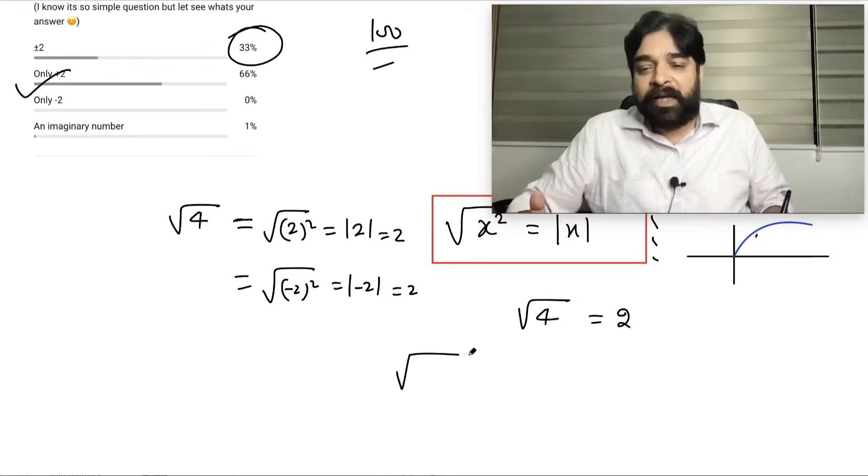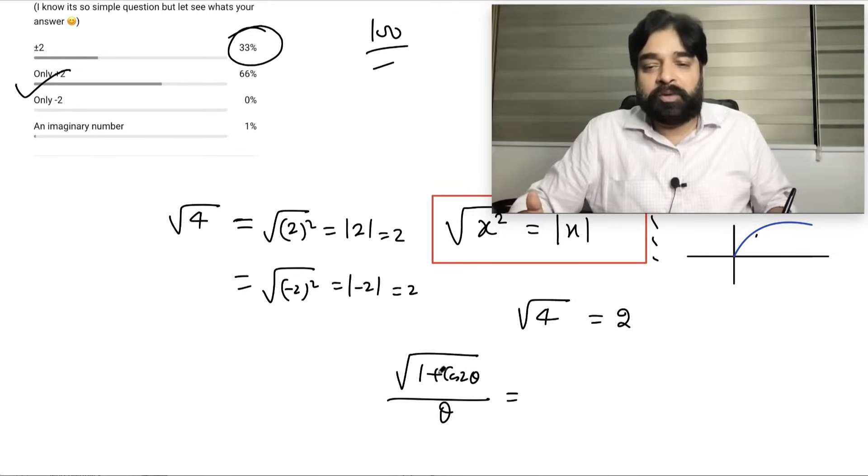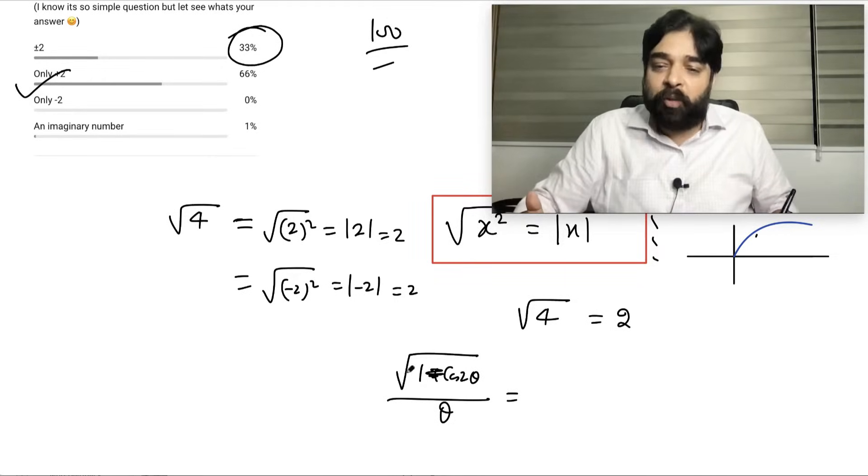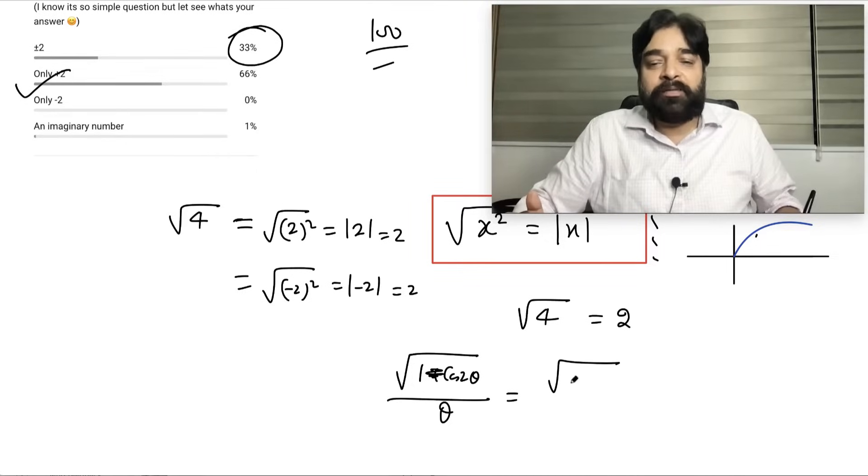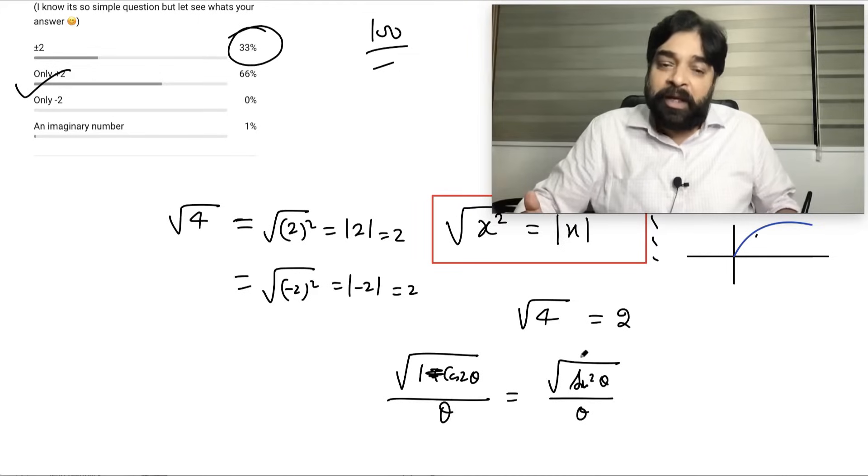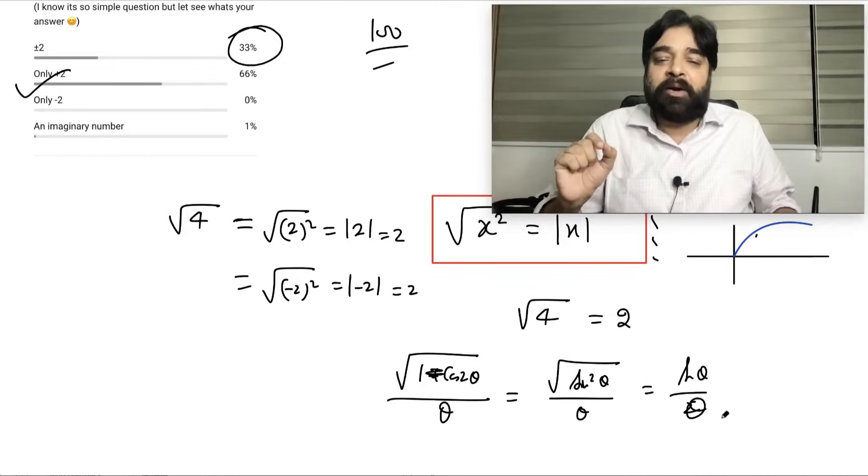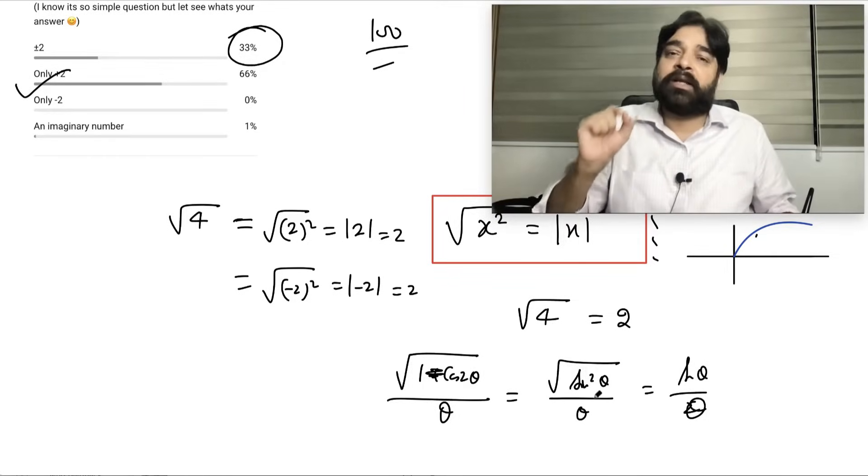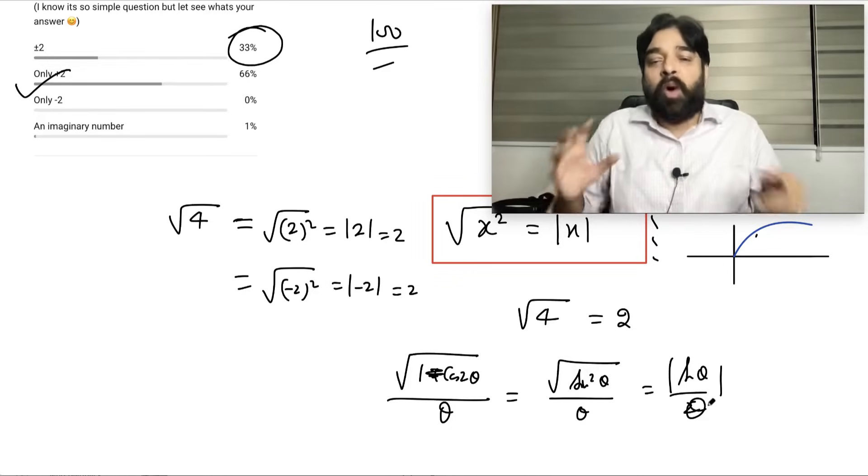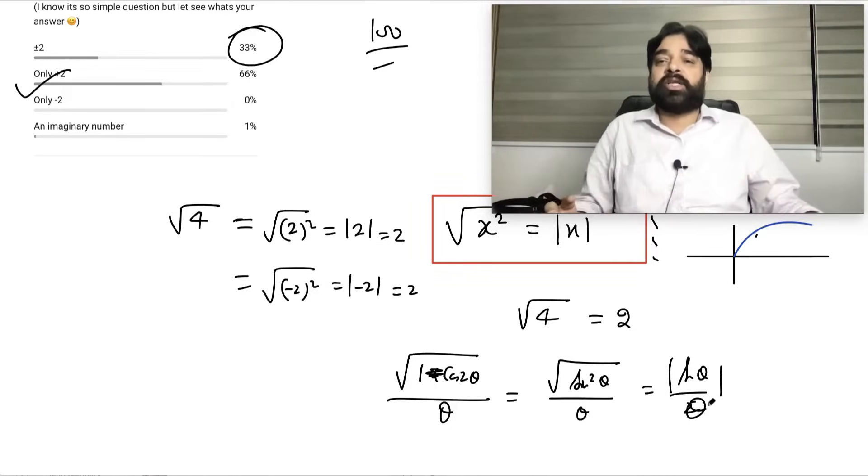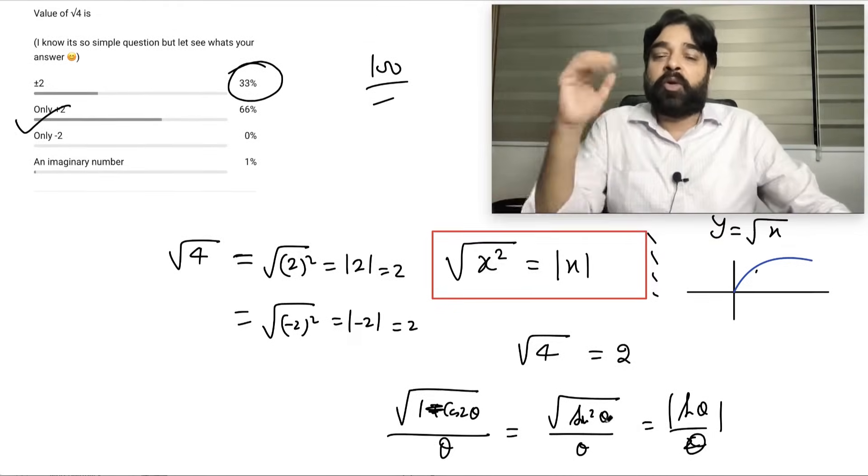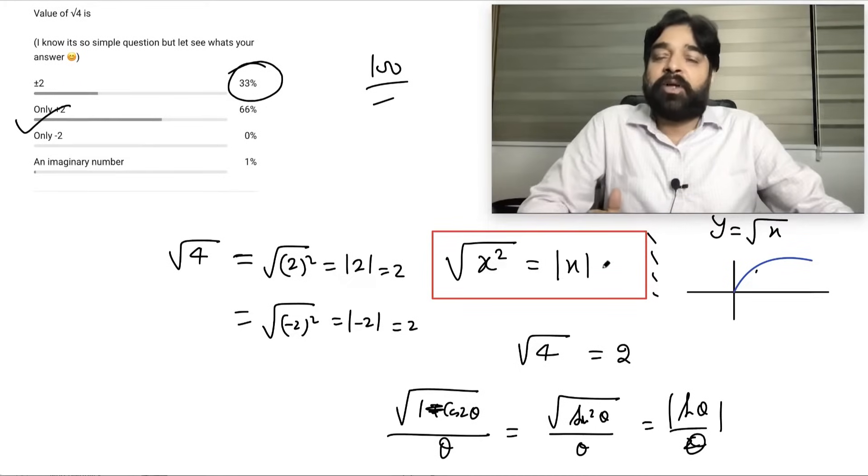Sometime they will say root of 1 minus cos 2 theta divided by... 1 minus cos 2 theta is the root of sin square theta divided by theta. So many times in JEE and all used to come. So here the real game is done. If you write sin theta by theta then answer will be wrong. Because root sin square theta is the mod sin theta.